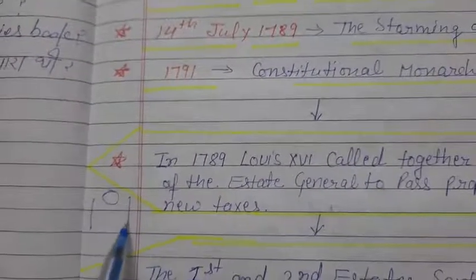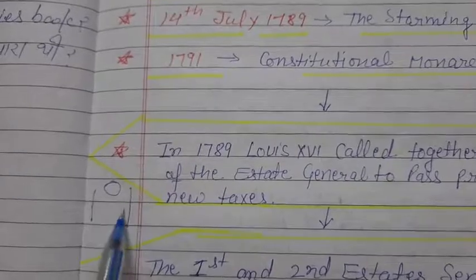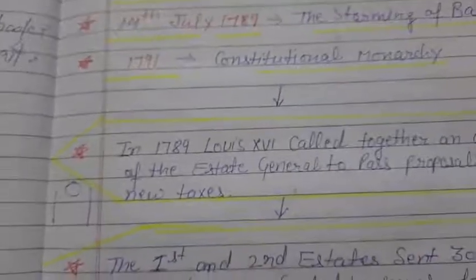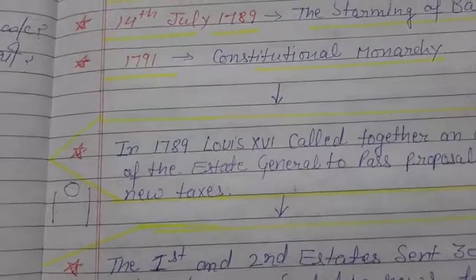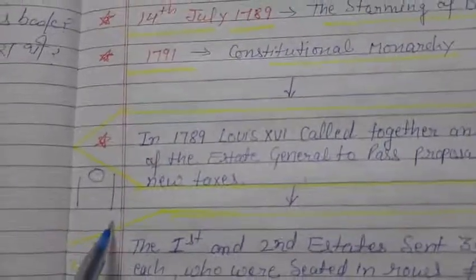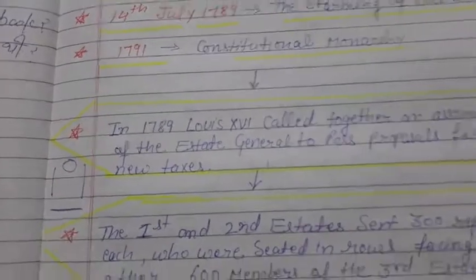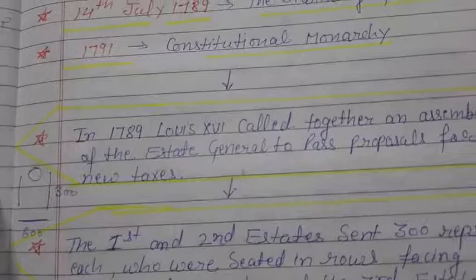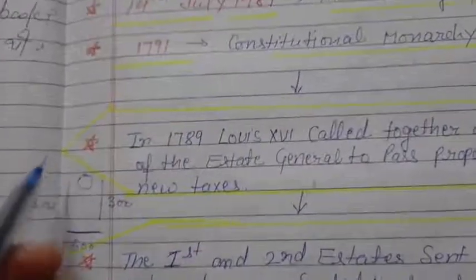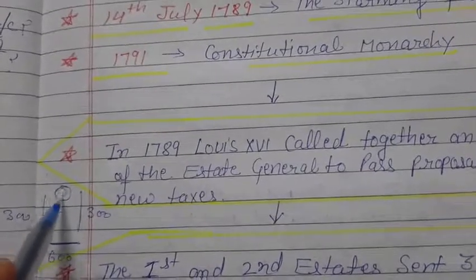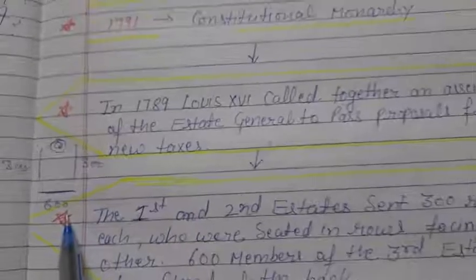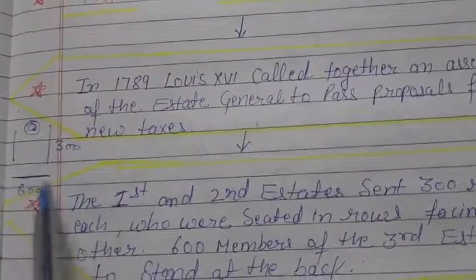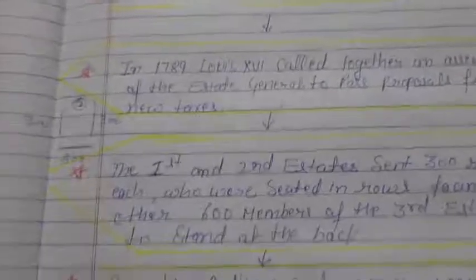They were seated facing each other - one group's face this side and the other group's face the other side, with Louis XVI seated in the middle. The Third Estate's people stood at the back. Their strength was only 600 members. So First Estate had 300, Second Estate had 300, and Louis XVI was in the corner. This is how the States-General meetings were held, where Louis XVI called all representatives for consultation.